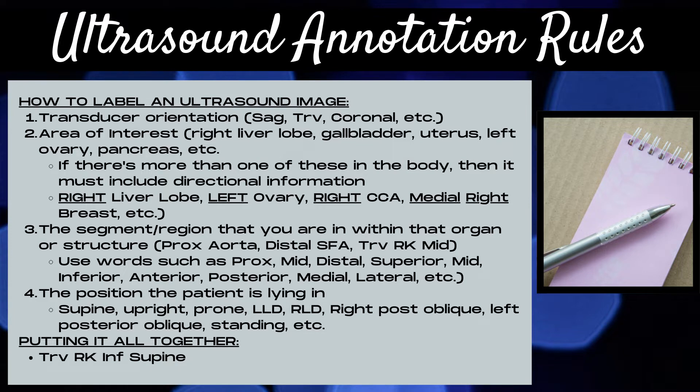You want to clearly label the area of interest that you're focusing on — whether it's the right lobe of the liver, the gallbladder, the uterus, the left ovary, or the pancreas. Your area of interest is not only the star of your image, it should also be the star of your annotation. Note that if there's more than one of your area of interest in the body, then it must include directional information.